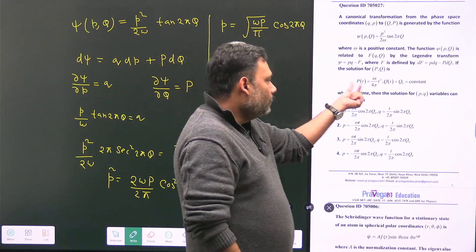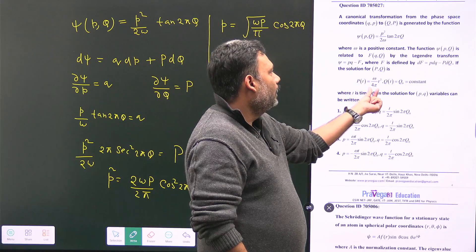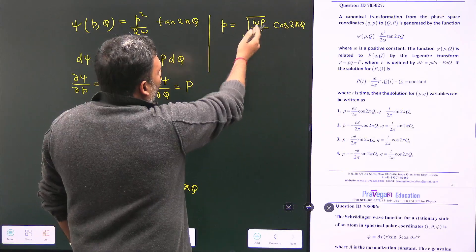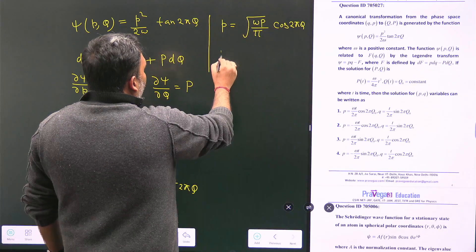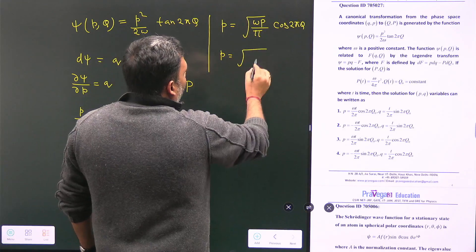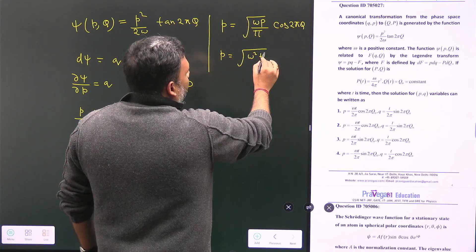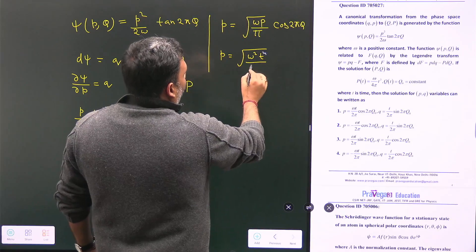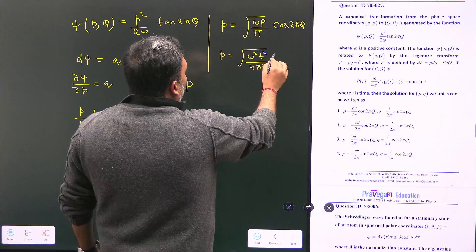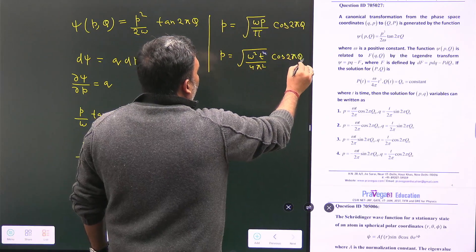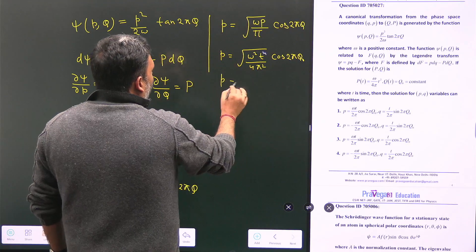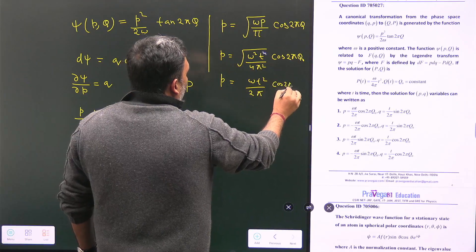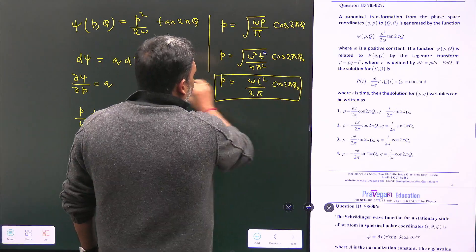It is also given that at a particular time: P(t) = ω(4π/t²) ... actually P(t) = ω t² type form, and Q(t) = Q₀ (a constant). Substituting the given value of capital P, we get: small p = ω t² / (2π) · cos(2πQ₀).